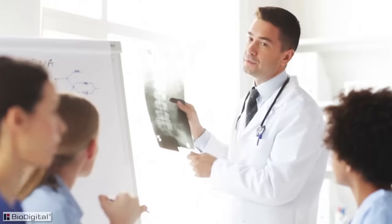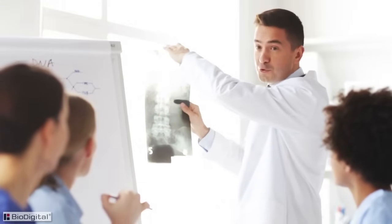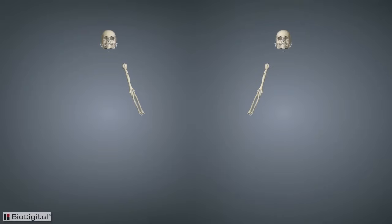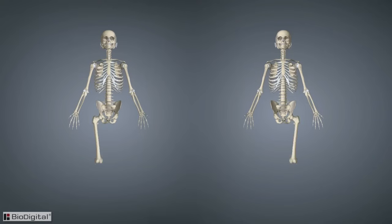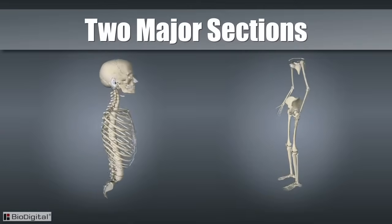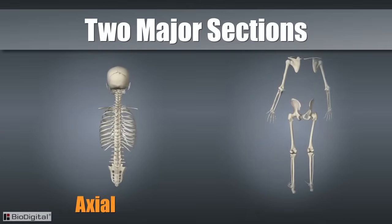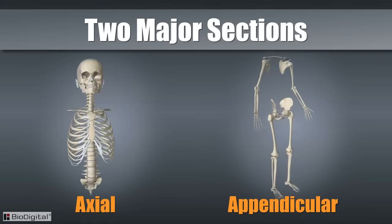We'll provide a complete, in-depth study of the skeletal system in other CTE videos. But for now, we'll just be doing a brief overview of the skeletal system as a whole. The skeleton is divided into two major sections: the axial skeleton and the appendicular skeleton.